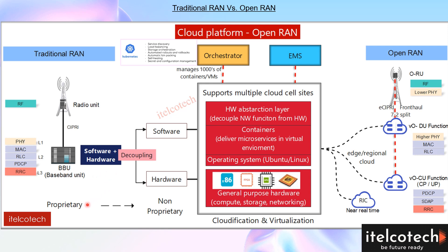In Open RAN there is a shift from proprietary to non-proprietary and a decoupling of software and hardware. In virtualization, there is general purpose hardware instead of proprietary hardware, with an operating system on top. Using containers, it provides microservices depending on what functionality we want on a particular hardware, with software accordingly. We have an orchestrator — here Kubernetes — which manages different containers and VMs. We also have an EMS, similar to what we have today, which manages multiple different sites. With cloudification, we can scale up and scale down capacity as needed.